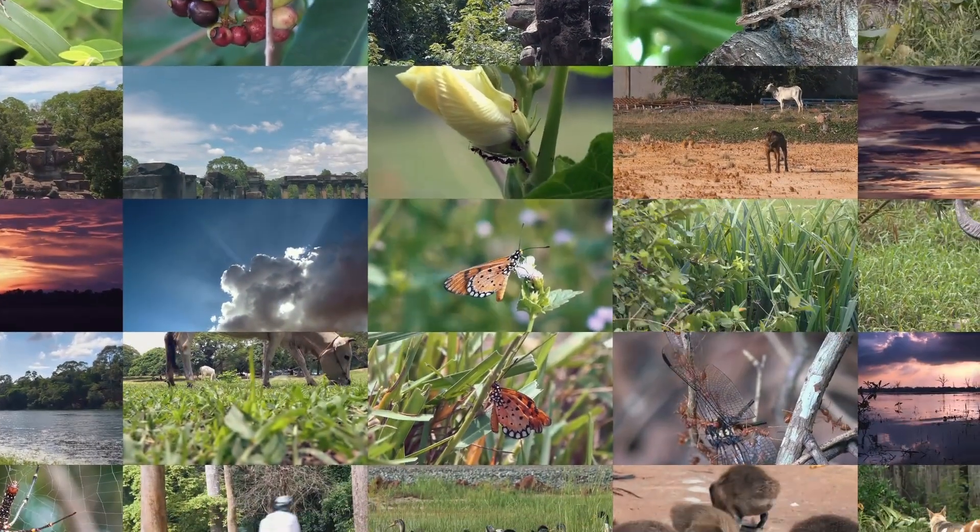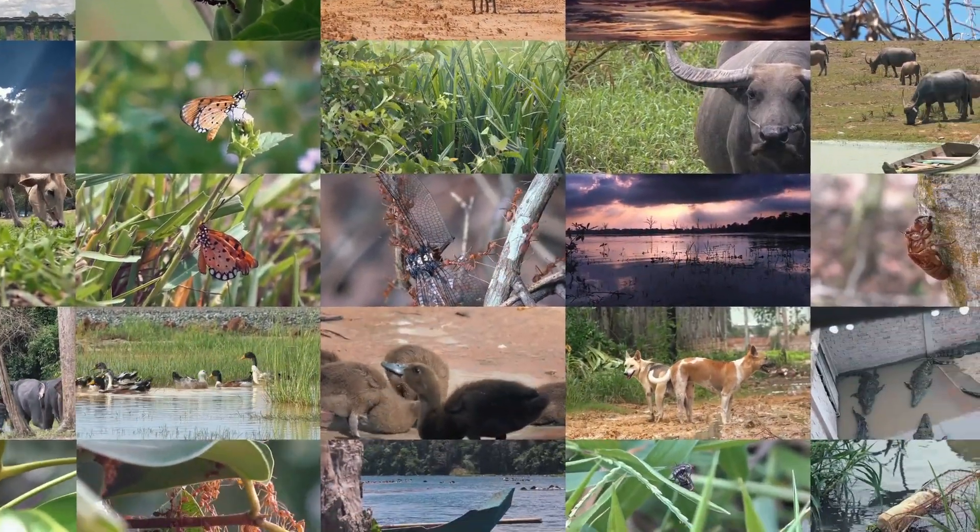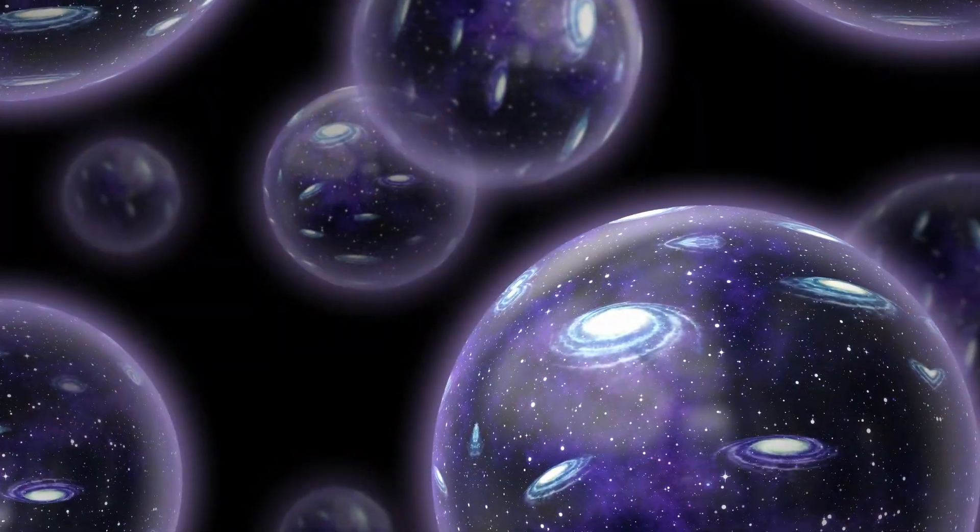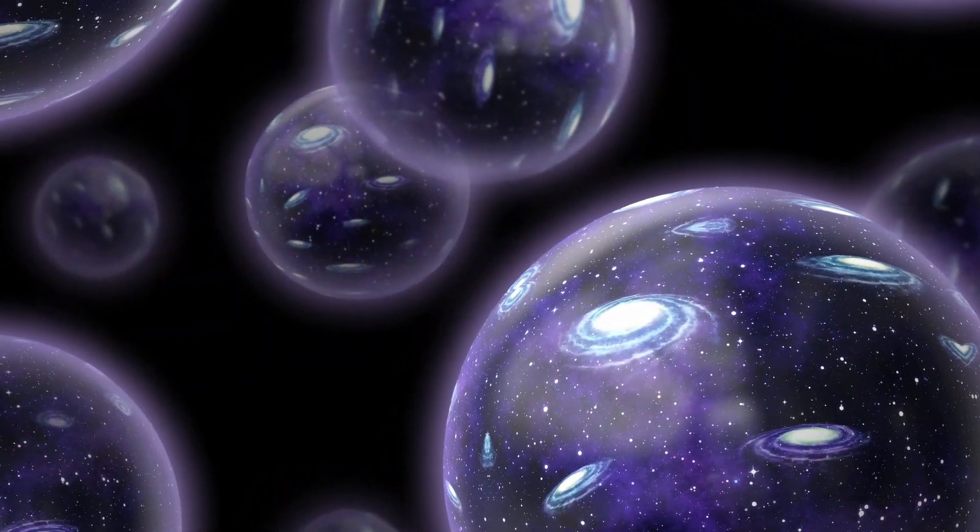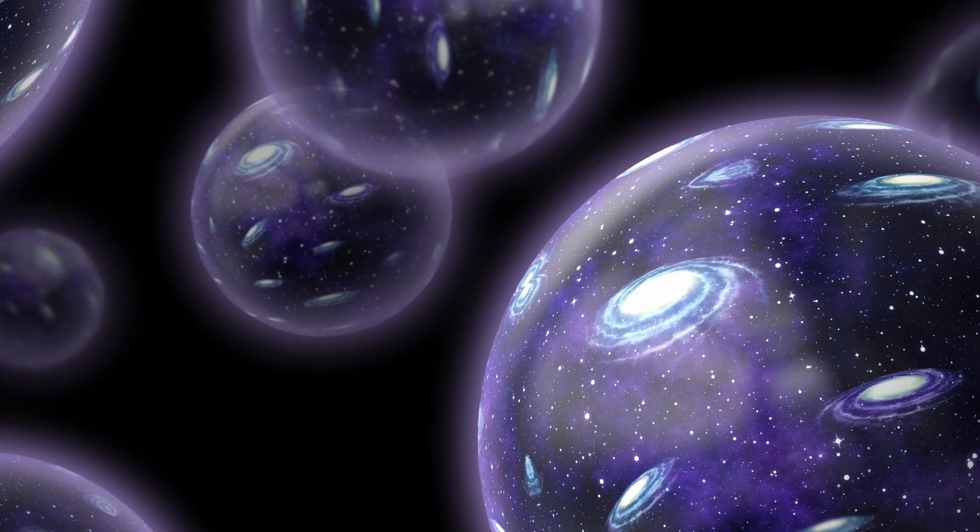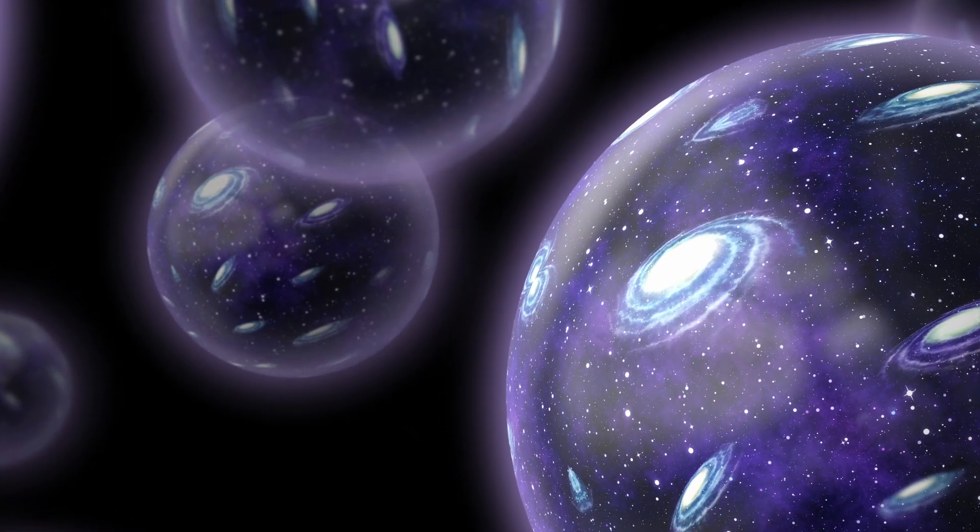All possible realities would be out there as long as they are compatible with the laws of physics. This would indeed explain the mystery of why the constants of nature appear to be fine-tuned for the emergence of life in this universe. Most of the multiverse would be unsuitable for life to evolve. With other words, intelligent observers exist only in those rare bubbles in which, by pure chance, the constants happen to be just right for life to evolve.